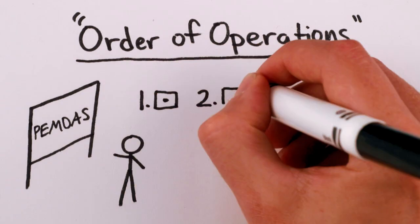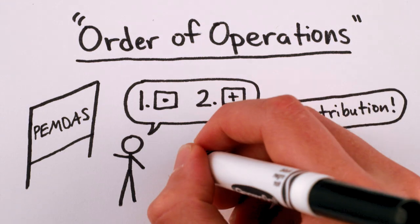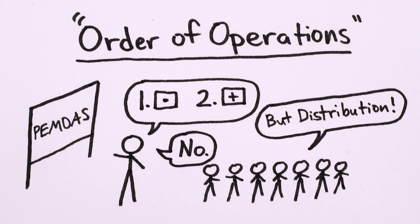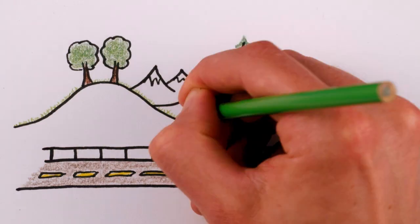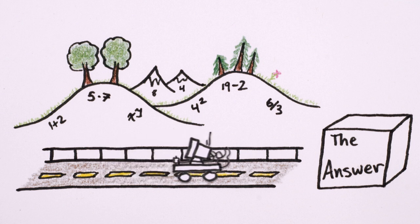The order of operations learned in school, however, is different, it's a mechanical set of instructions that dictates just one of the many ways you can do algebra. It locks you into a single path through the beautiful mathematical landscape, which, while necessary for a computer whose goal is merely to give you the right answer,